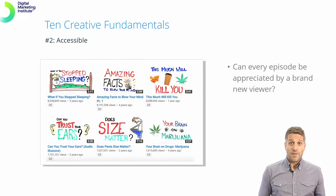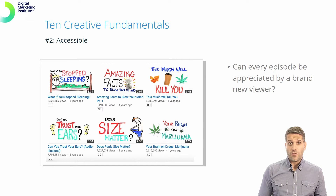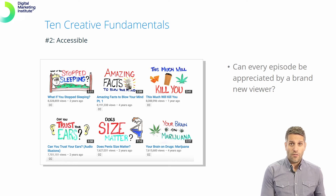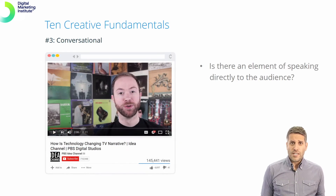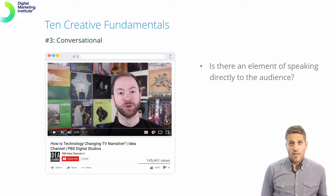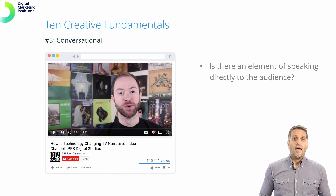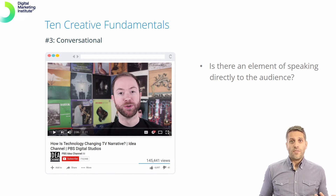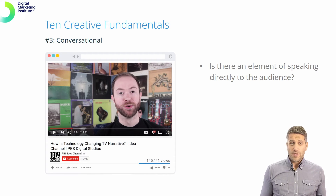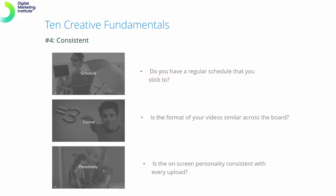Accessibility — if a viewer discovers one of your YouTube videos, can they appreciate it without having to watch all of your other videos? Conversational — are you having a conversation with your audience? Make sure that an element within your video has a straight-up conversation with the viewers experiencing your content.